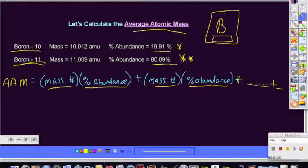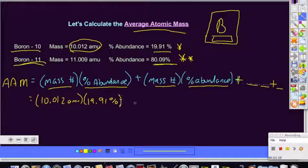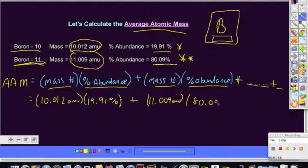So our example here, boron 10. The actual mass number for boron 10 is 10.012 amu's. The percent abundance is 19.91%. And I'm going to add that to the mass number for the second isotope of boron, which is boron 11. The actual mass number is 11.009 amu's. And we're going to multiply that by the percent abundance of 80.09%.